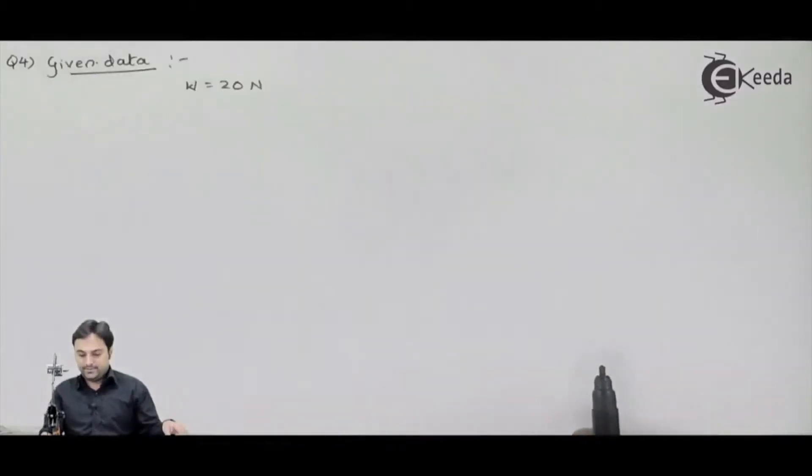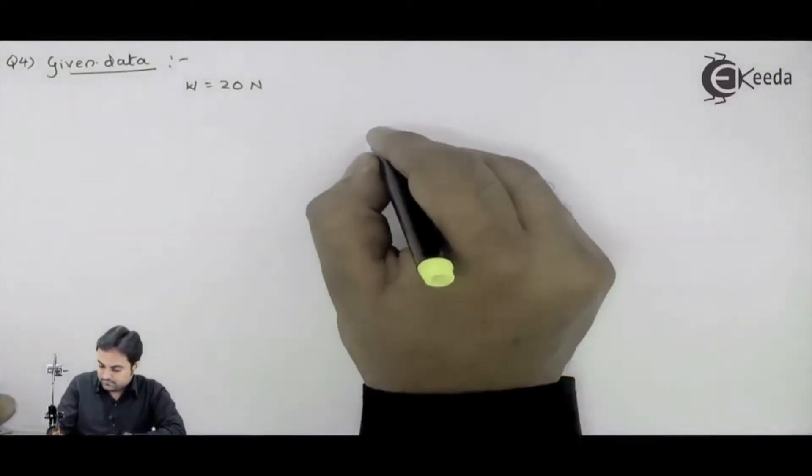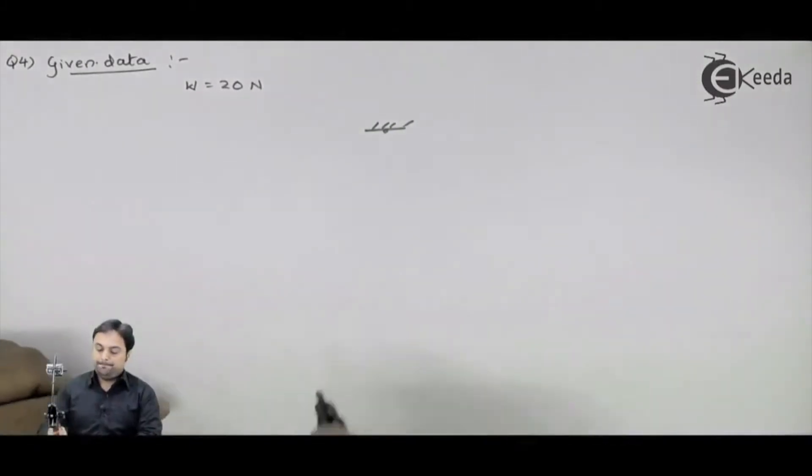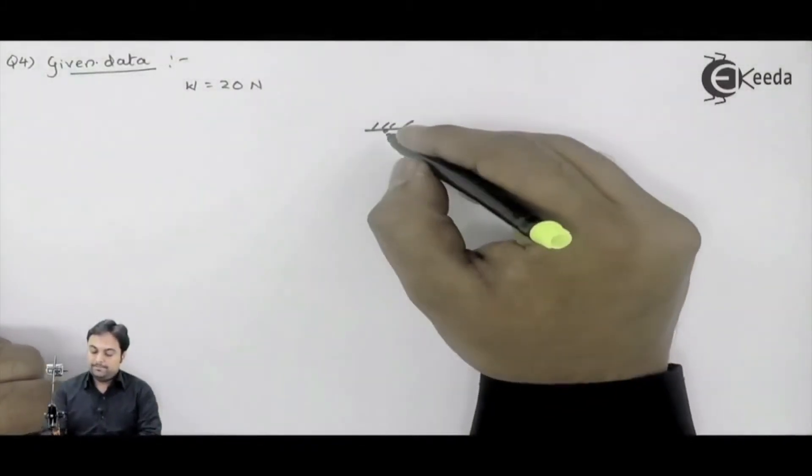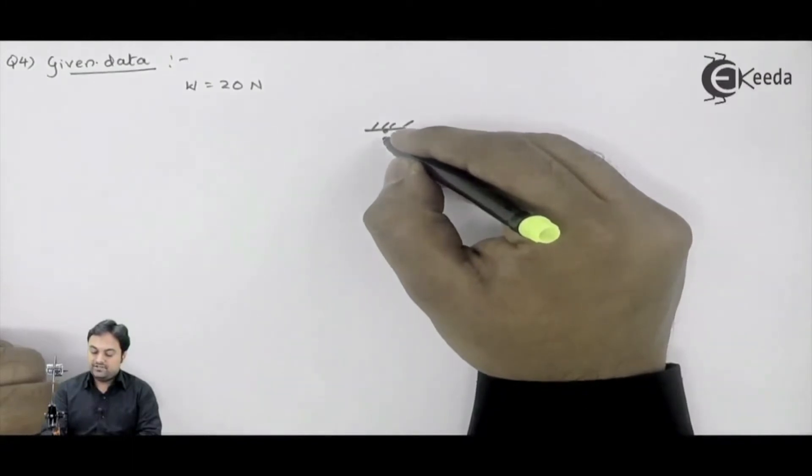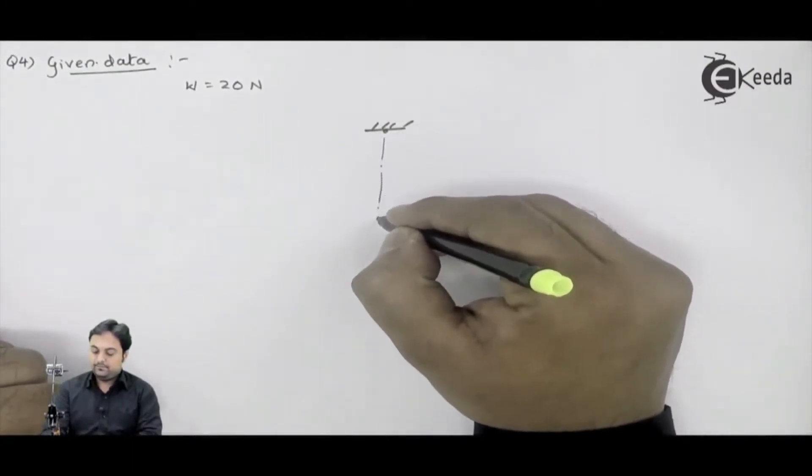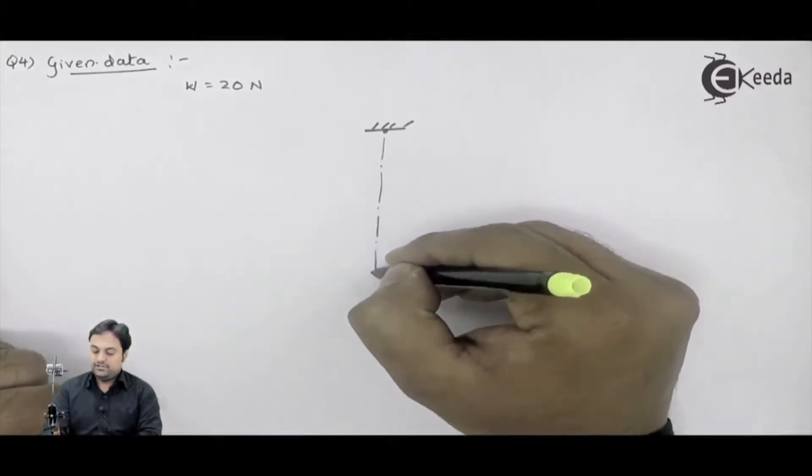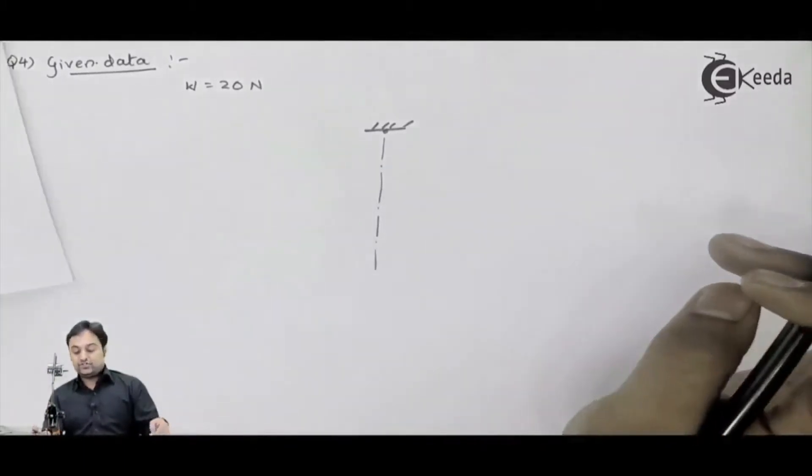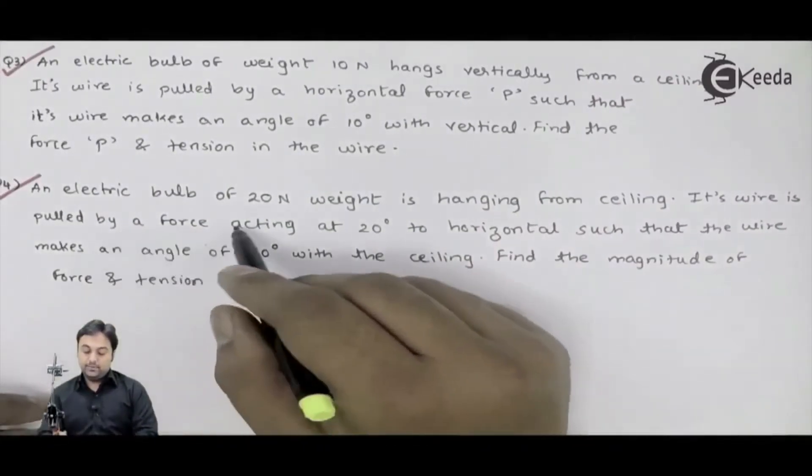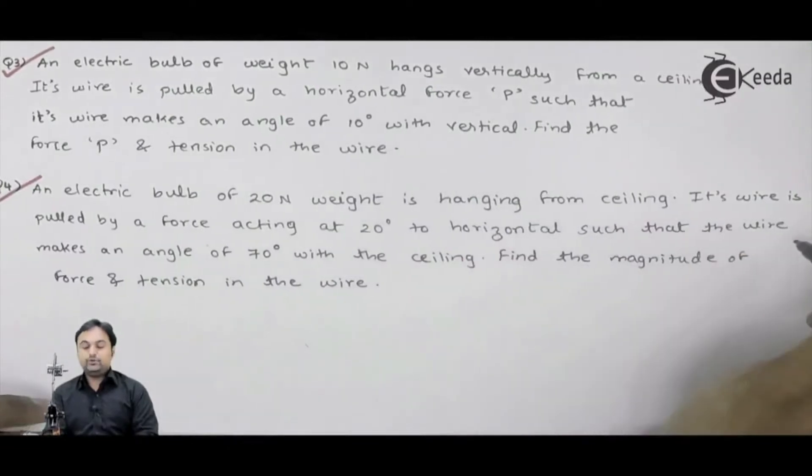Now, the condition I can draw this. Initially we have a string which is being pulled. Now, how it is pulled? If I can just draw this vertical line, this shows the initial position of the string. This string is pulled in such a way that it is pulled by a force acting at 20 degrees to horizontal.